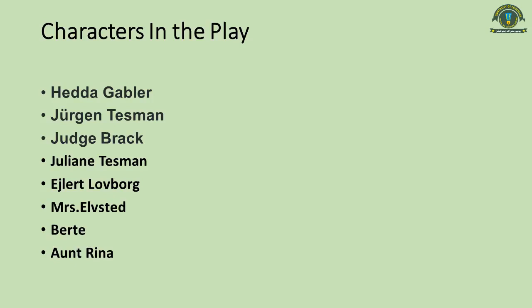The first character is Hedda Gabler, daughter of the famous General Gabler. As a child she enjoyed luxury and high-class living. As the play begins she is returning from her honeymoon with Jorgen Tessman, a scholar with good opportunities but not as much money as Hedda is accustomed to. Her married name in the play is Hedda Tessman. She is an intelligent, unpredictable, and somewhat dishonest young woman who is not afraid of manipulating others for her own personal benefit.